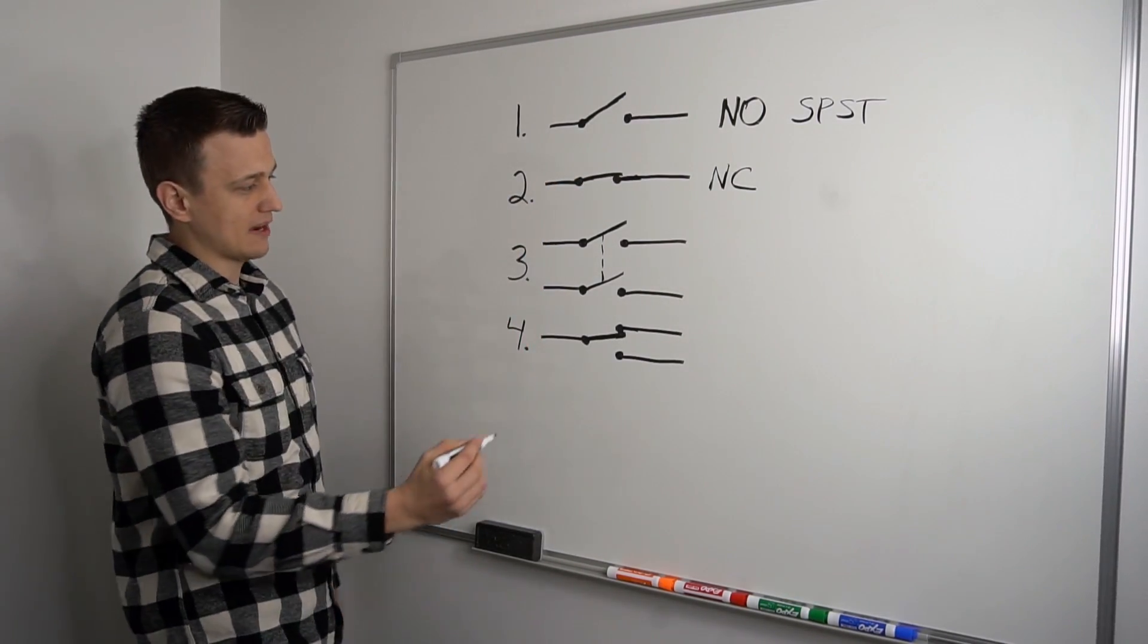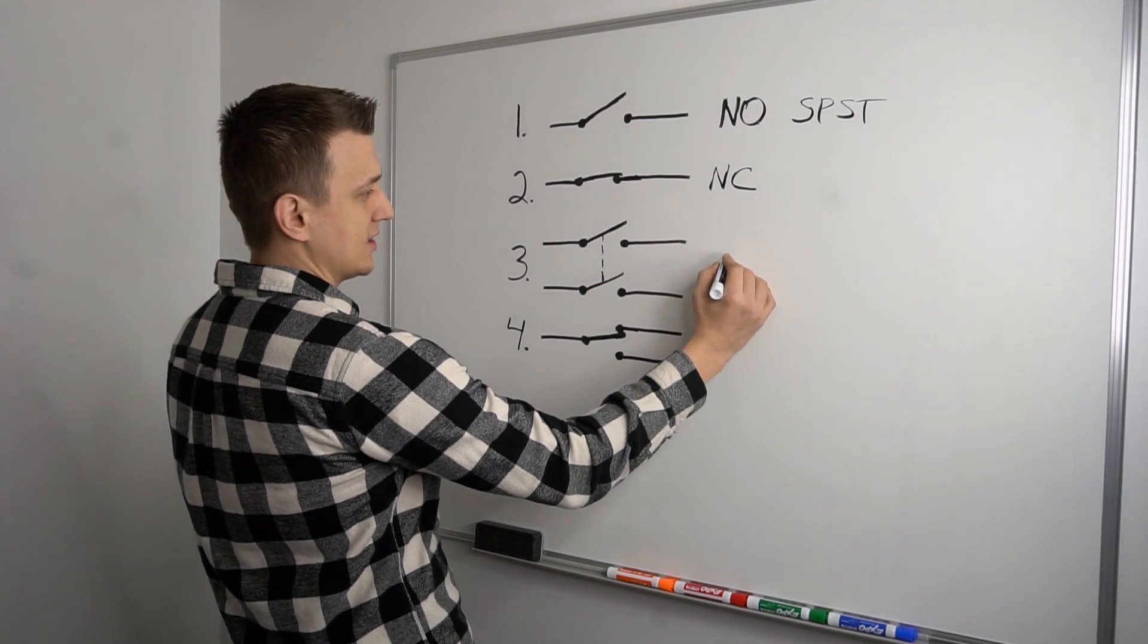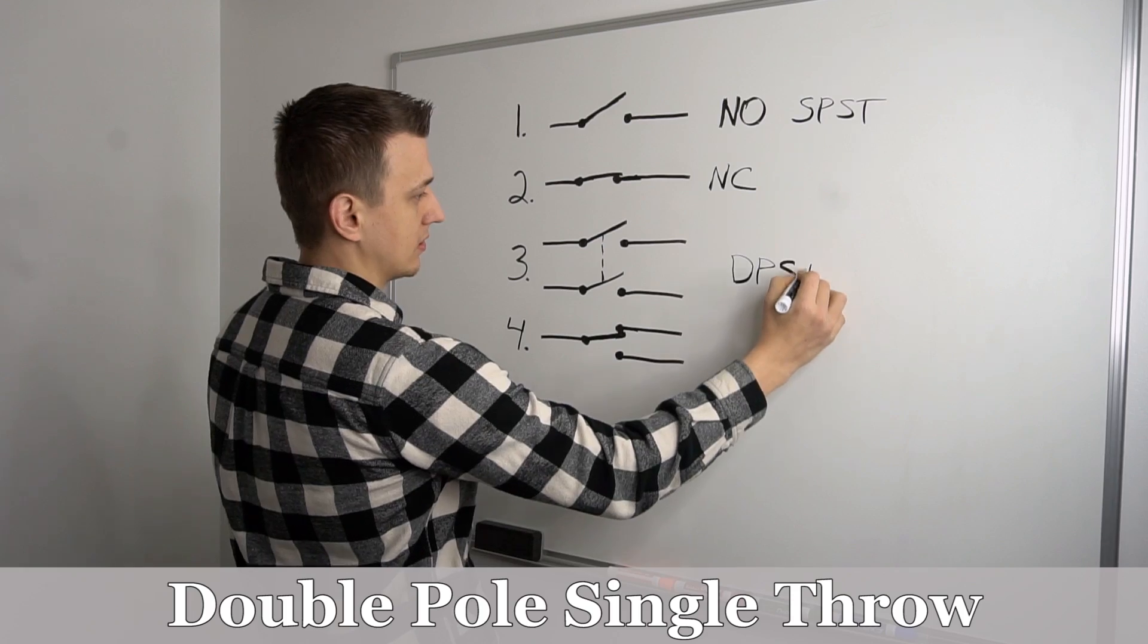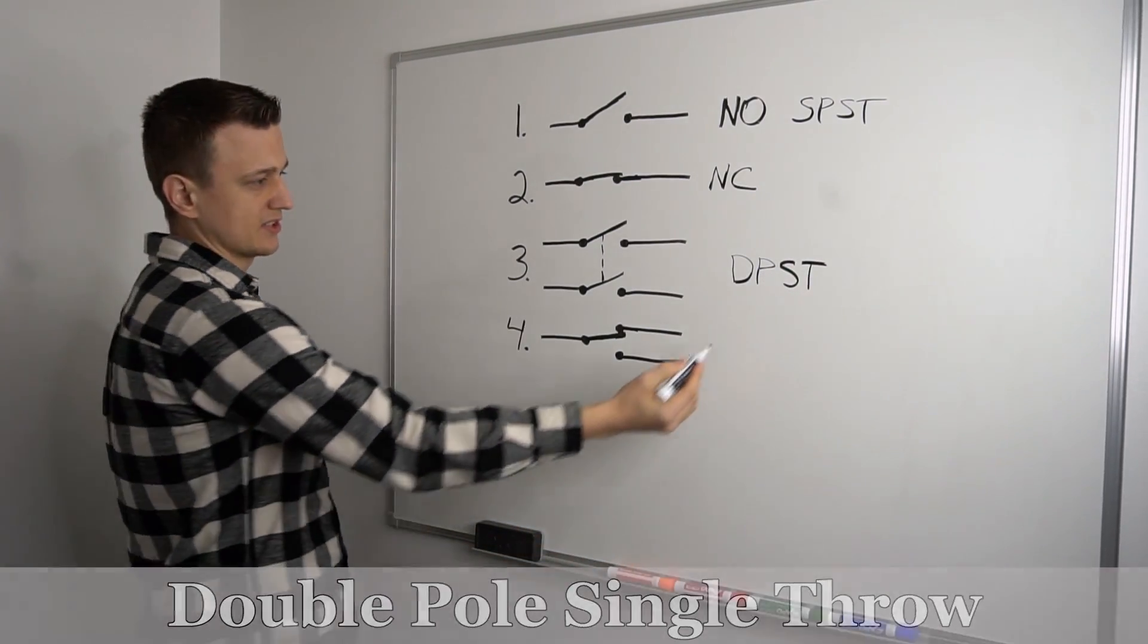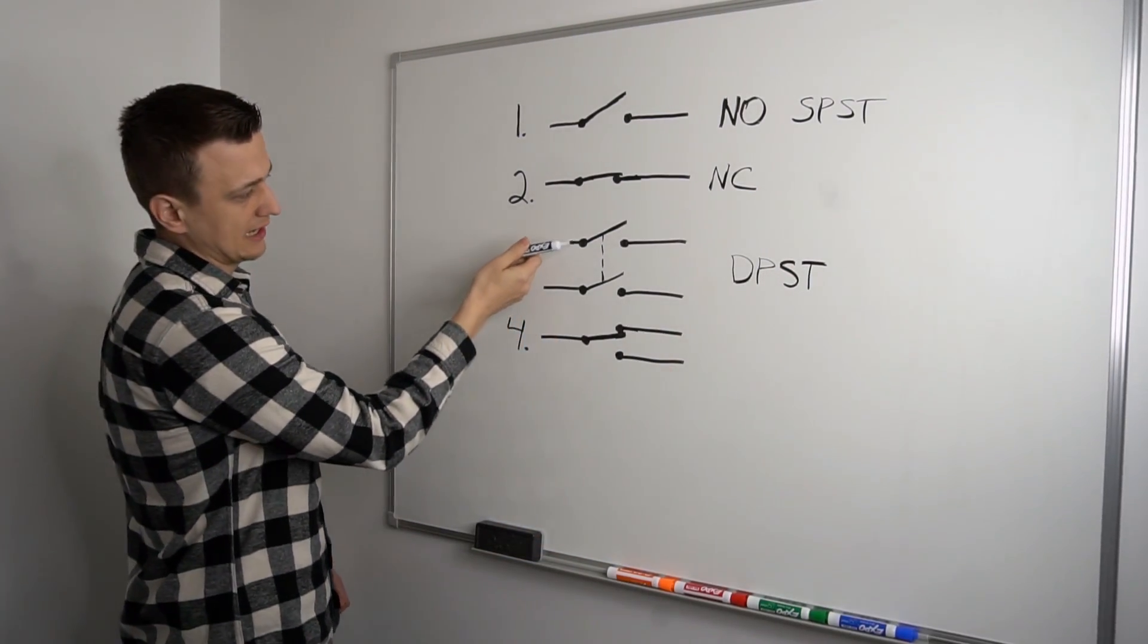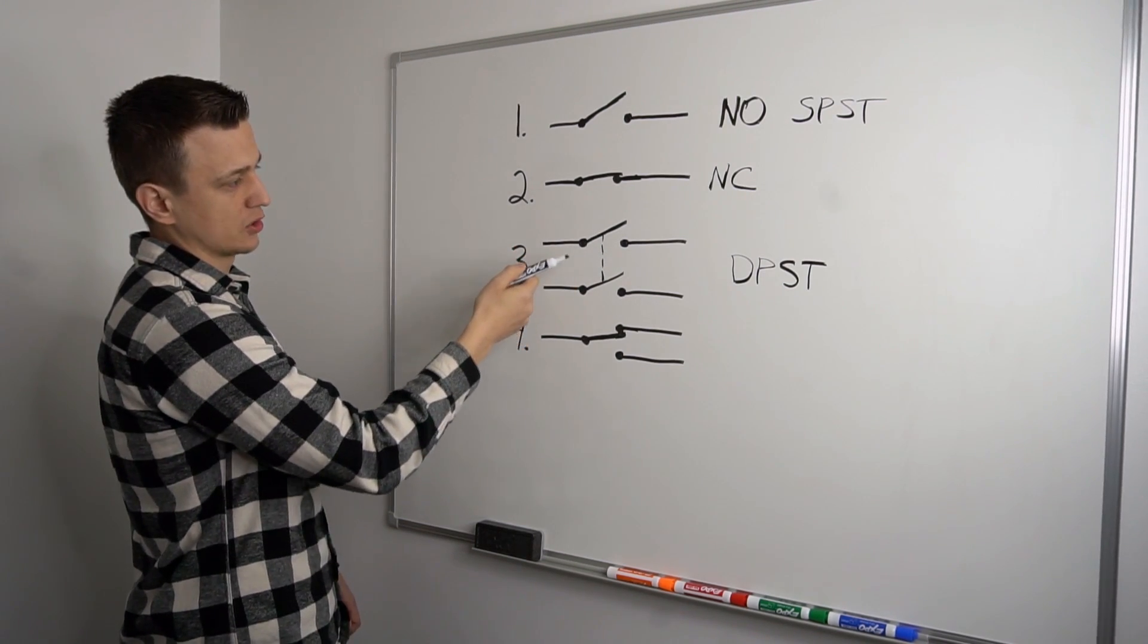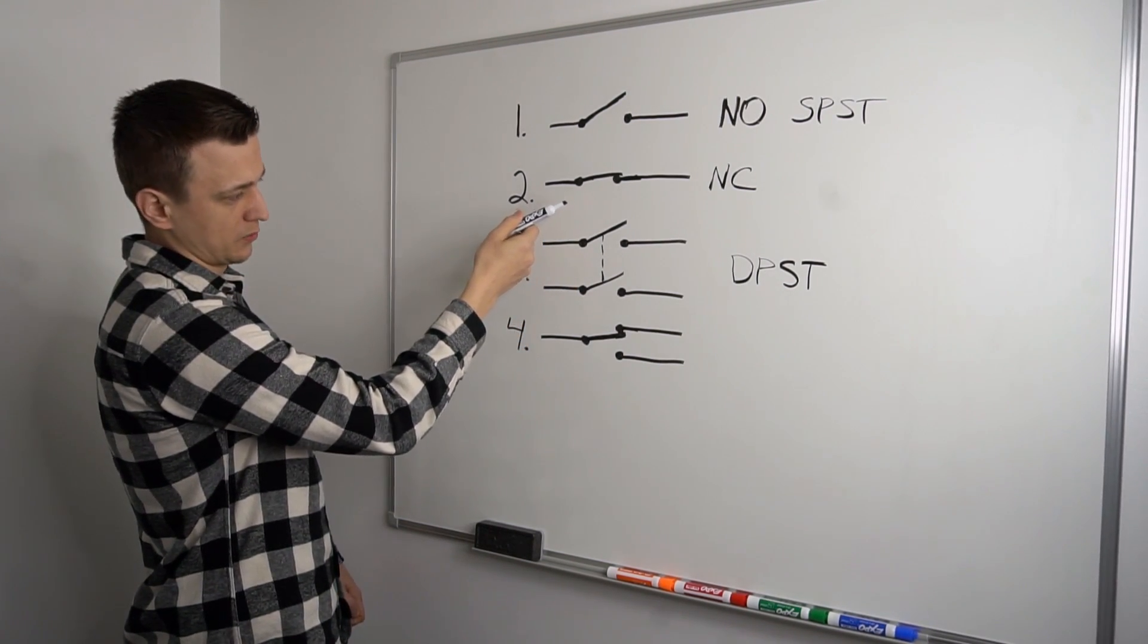And the next switch we have right here is a double pole. So DP, single throw. Now the reason it's a single throw is because the dash lines right here, they signify that these two are connected. So when you switch one off, the other one goes right with it.